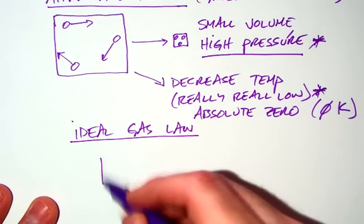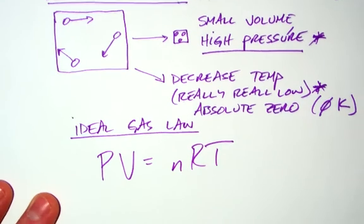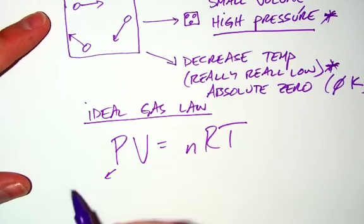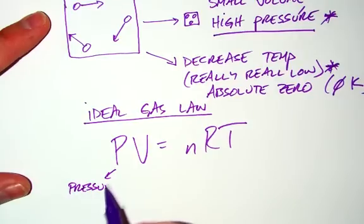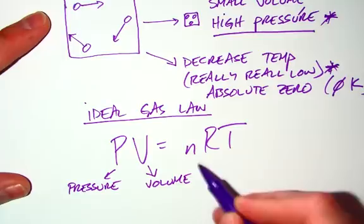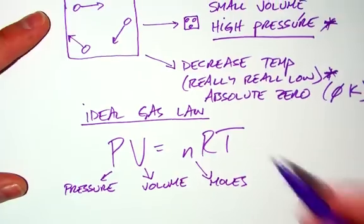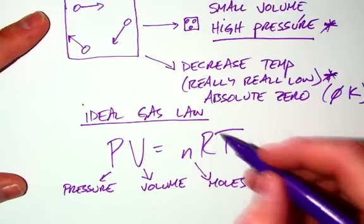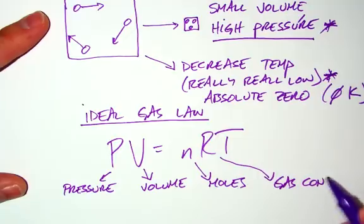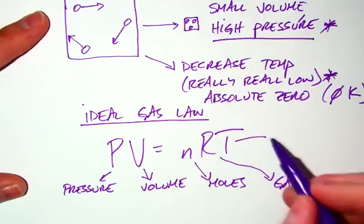The ideal gas law is PV equals NRT. We know that P is pressure, V is volume, N is moles, R is a gas constant, and then T is temperature.